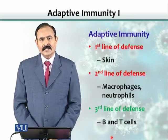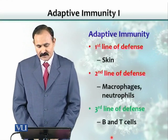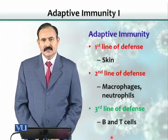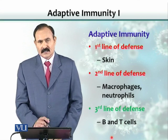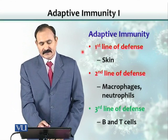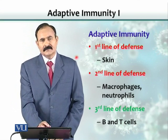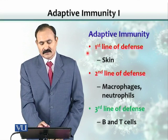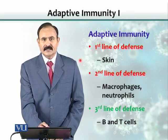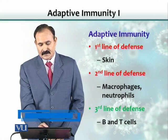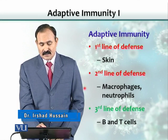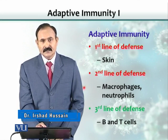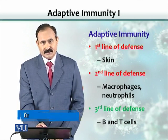In the previous lecture, we discussed that adaptive immunity and innate immunity are part of the immune system. Innate immunity has two lines of defense. The first line of defense includes physical barriers such as skin. The second line of defense includes macrophages, neutrophils — in other words, cells and their secretions.